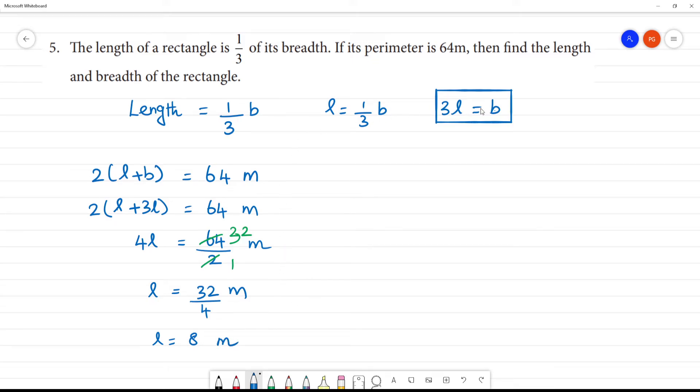Now, breadth is equal to how much? Breadth is 3 into 8. So breadth is equal to 24 meter. Clear?